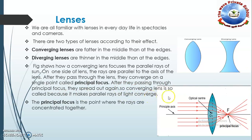Why is it called a converging lens? Because this lens makes the rays converge at one point — to meet at one point. The principal focus is the point where the rays are concentrated together.